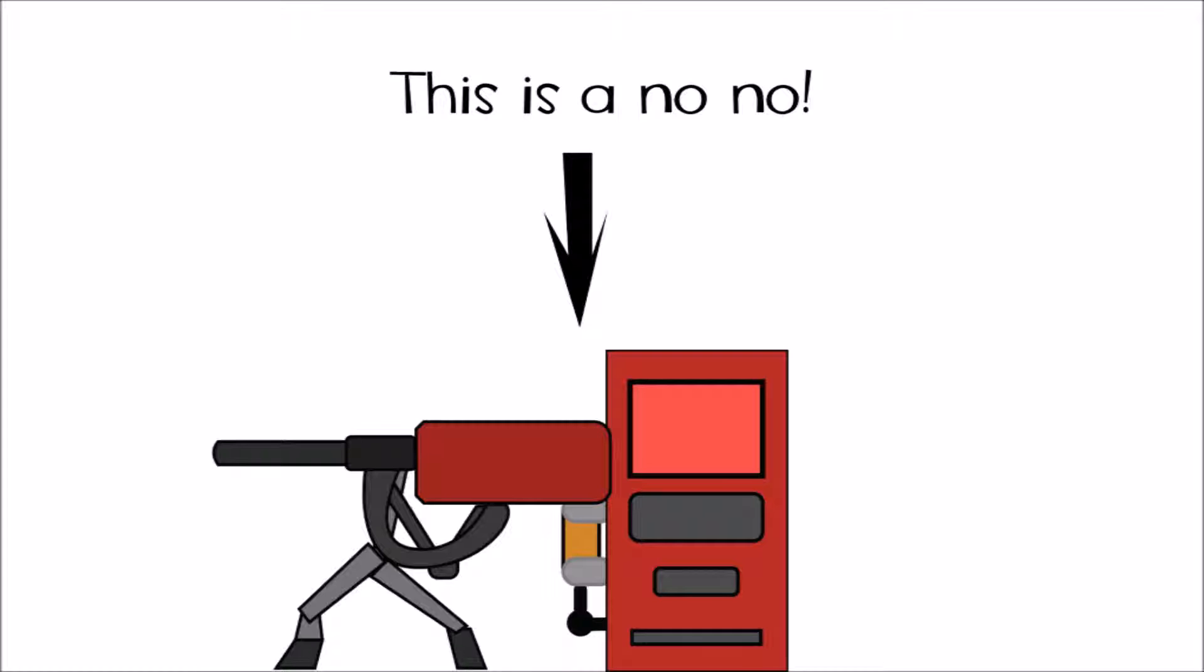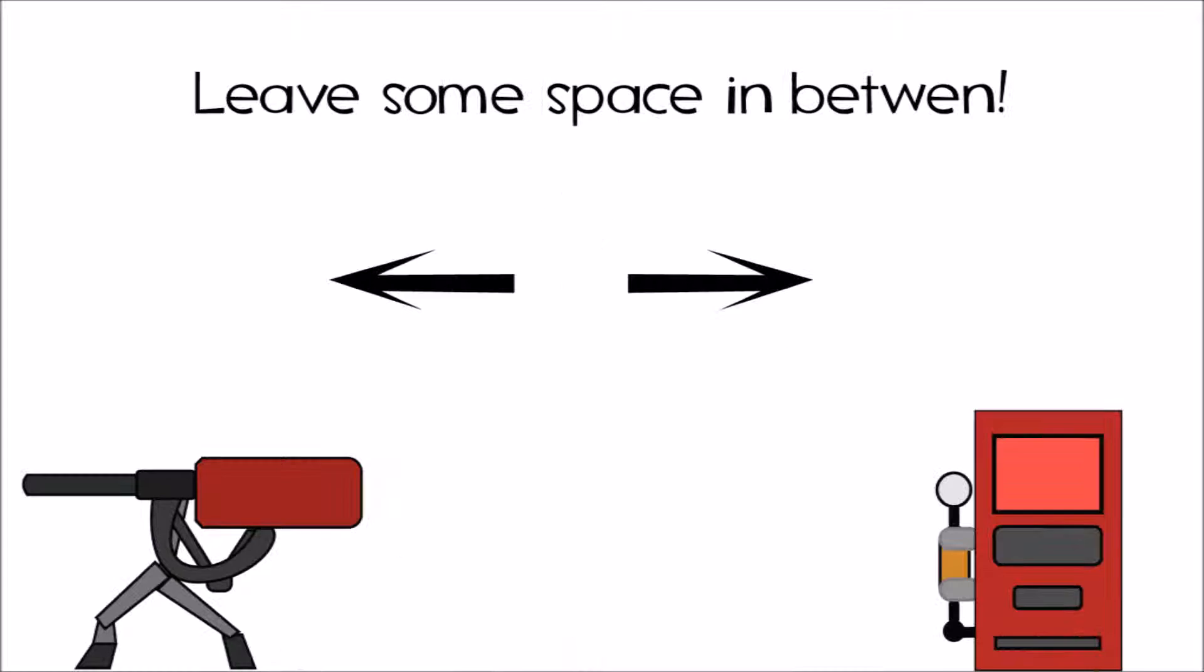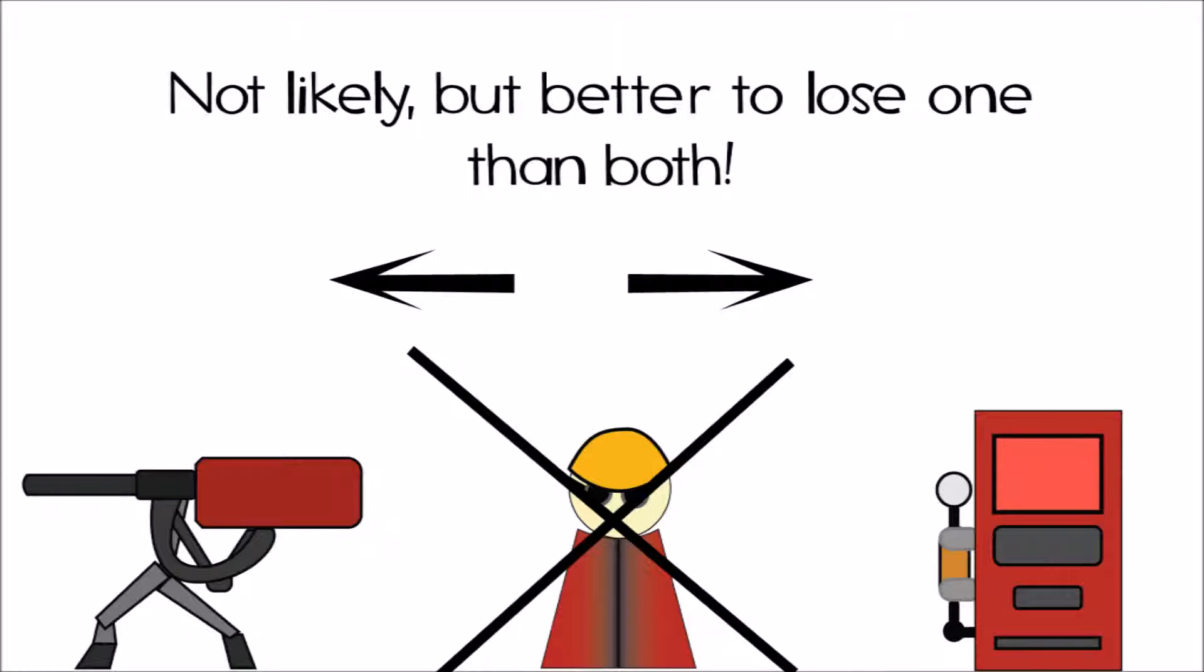The third requirement is that your Dispenser should not be directly next to any of your other buildings. This doesn't mean that you shouldn't place your buildings next to each other, but what this means is that, in a worst case scenario, if you are dead, your Dispenser should be far enough away from your other buildings so that if you die, it has a chance to live if the enemy storms in. The chances are low, but it's better to let the enemy destroy your sentry instead of losing both buildings to a single push.